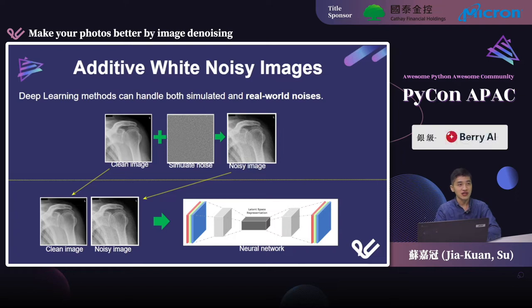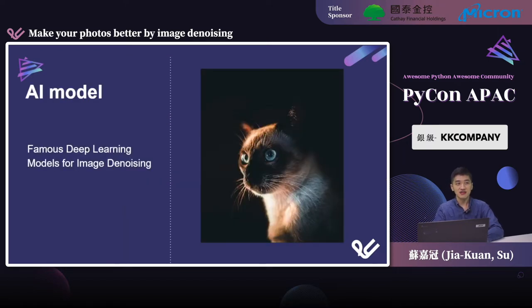We can simulate various kinds of noises to degrade image quality, and then use that data to train deep learning models. The most simple way is to randomly generate some noises and add them to the original clean images. The noises here can be real-world noises and are not necessarily statistical. In the next session, we will introduce some famous deep learning models for image denoising.